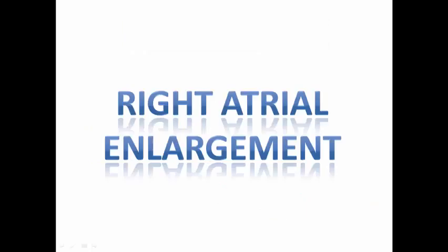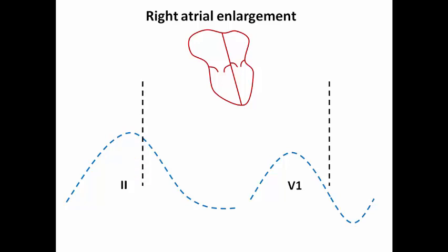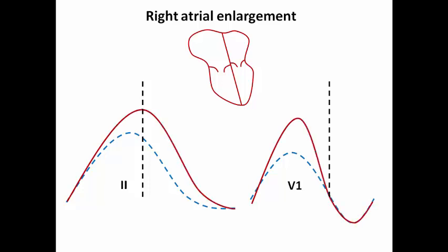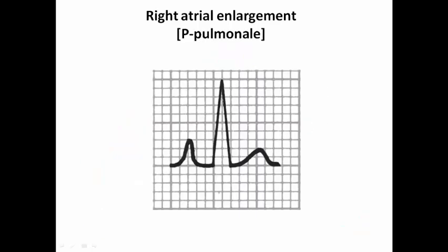Now let's move to right atrial enlargement. Unlike left atrial enlargement, where the left atrial component is affected, here the right atrial component is affected. What changes is the P wave amplitude — it becomes more than 2.5 mm in lead 2 and more than 1.5 mm in V1. The duration is not changed; only the amplitude increases. This is seen in the ECG example, where amplitude is increased but duration is unchanged — this is called P pulmonale.